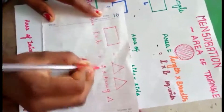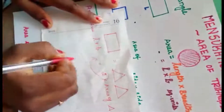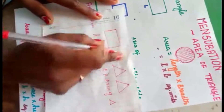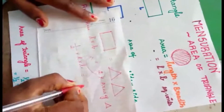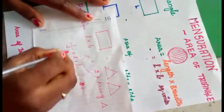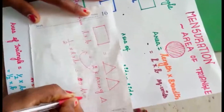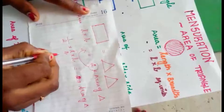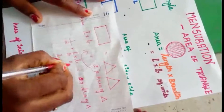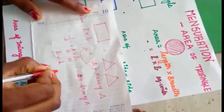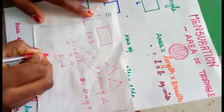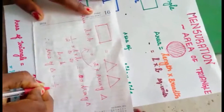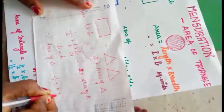So when the two comes to this side, we have a division. Therefore, one-half into length into breadth is equal to area of triangle. Here we have taken length as base and breadth as height. Therefore, area of triangle is equal to half into base into height.